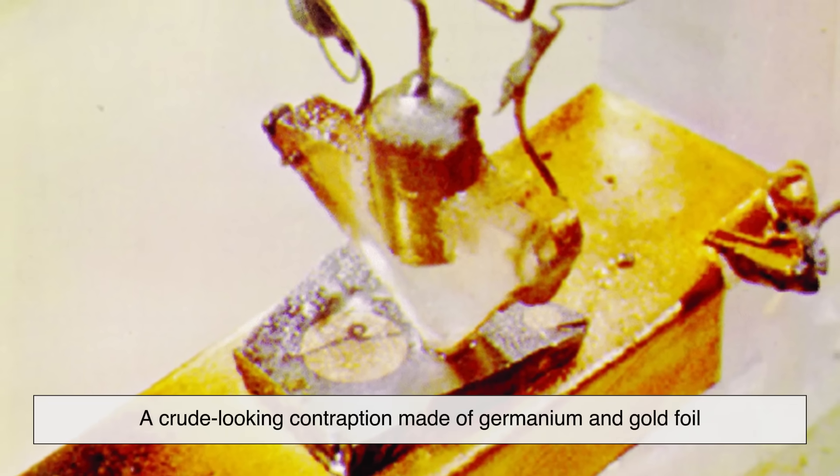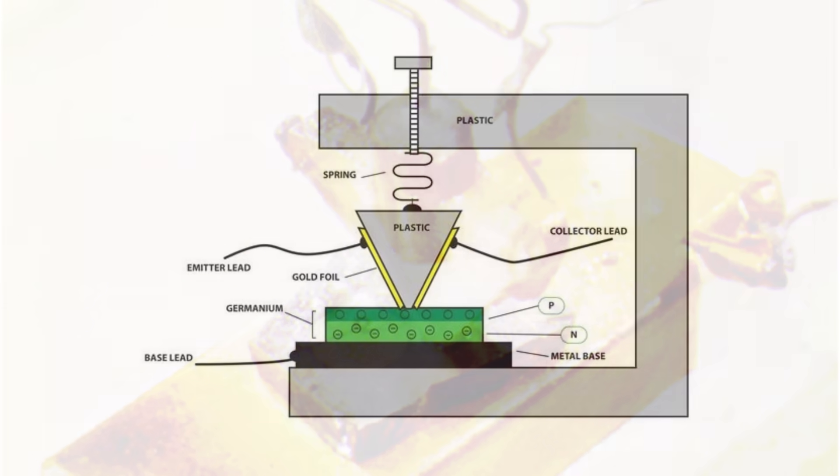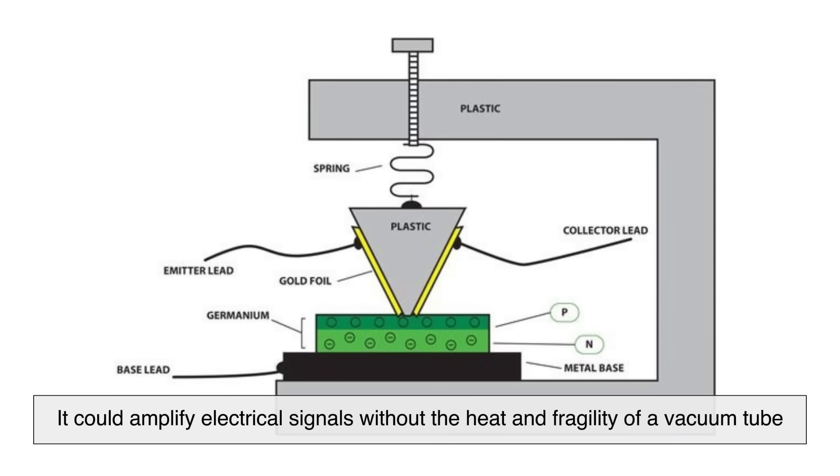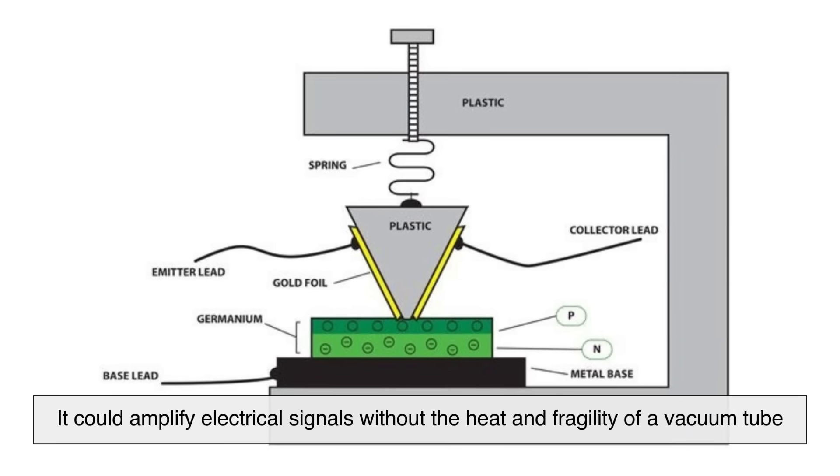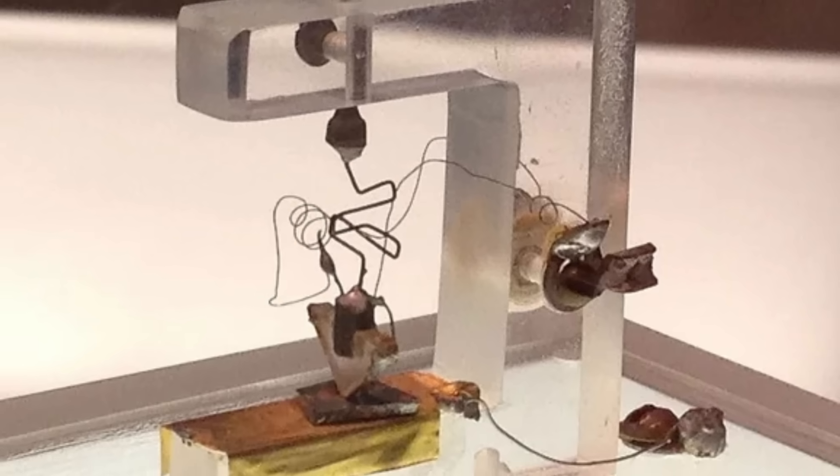Their breakthrough came in the form of the first working transistor, a crude-looking contraption made of germanium and gold foil. It didn't look like much, but it worked. It could amplify electrical signals without the heat and fragility of a vacuum tube. This single moment quietly kicked off the information age.